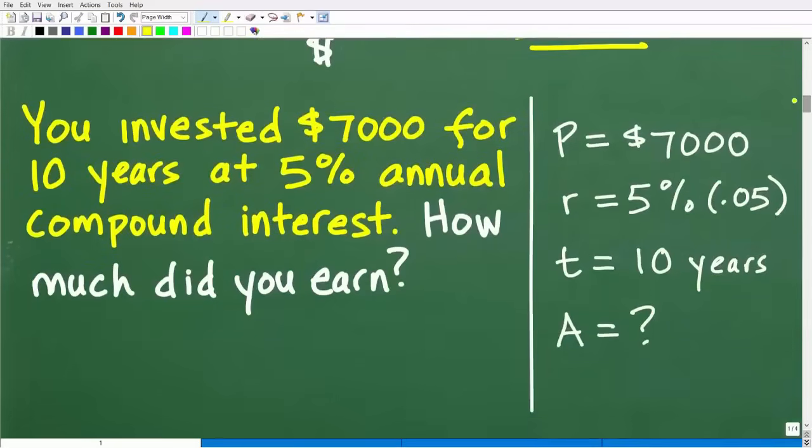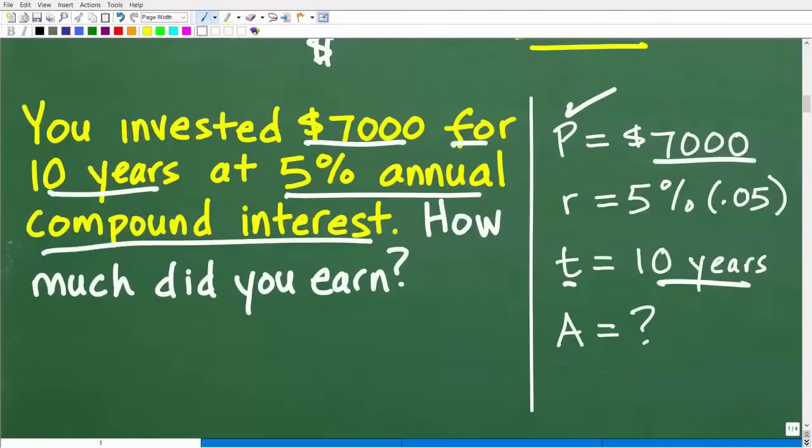But let's go ahead and get into the rest of this problem. And now that we understand what the formula is and what the variables stand for, we can just look through the problem. We invested $7,000. Well, that's our principal amount. $7,000 for 10 years. Well, our time is 10 years at 5% annual compound interest. So our rate is 5%. But as a decimal, that's 0.05. So we can calculate the total amount earned or the total amount of this investment after 10 years. And then we can take the difference to figure out how much we earn.